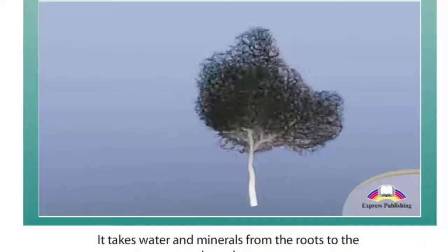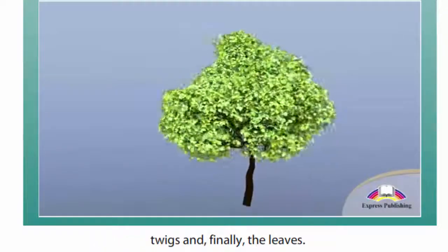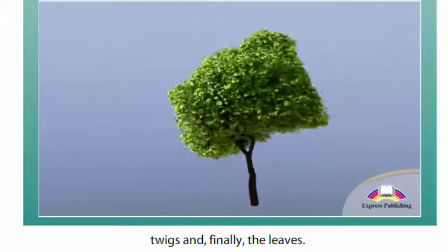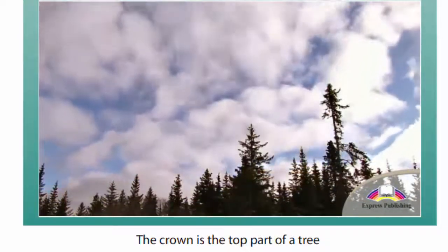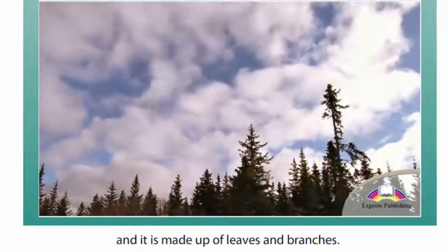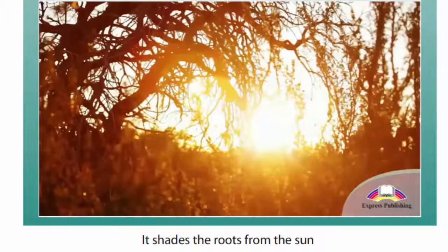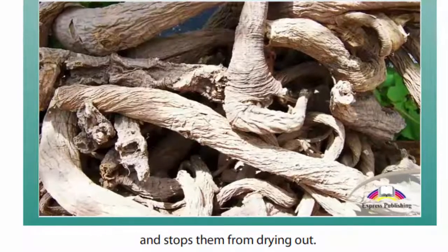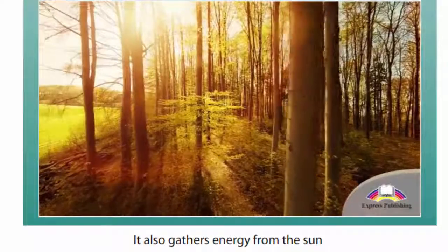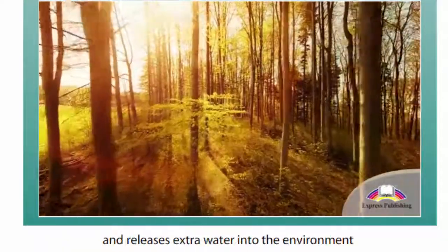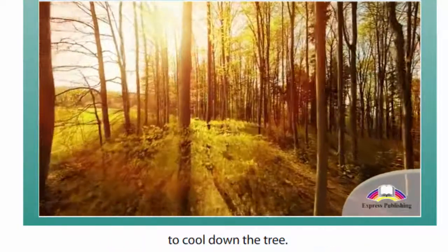The trunk takes water and minerals from the roots to the branches, twigs, and finally the leaves. The crown is the top part of a tree and it is made up of leaves and branches. It shades the roots from the sun and stops them from drying out. It also gathers energy from the sun and releases extra water into the environment to cool down the tree.